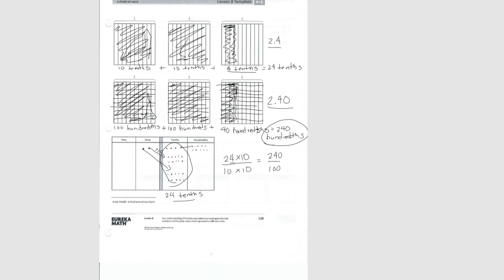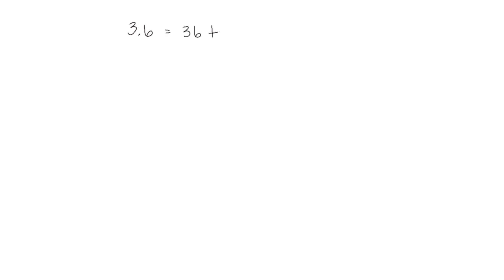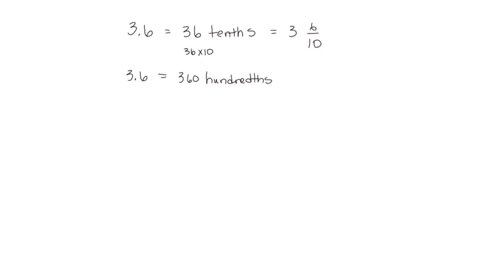We've shown it with an area model, a place value chart, and fraction equivalents — three ways to write decimal fractions. We can write them as a decimal, as units (for example, thirty-six tenths), or as a fraction. We can also convert to hundredths: thirty-six tenths becomes three hundred and sixty hundredths, since each ten is ten hundredths, so we're multiplying by ten — equal to three and sixty hundredths.